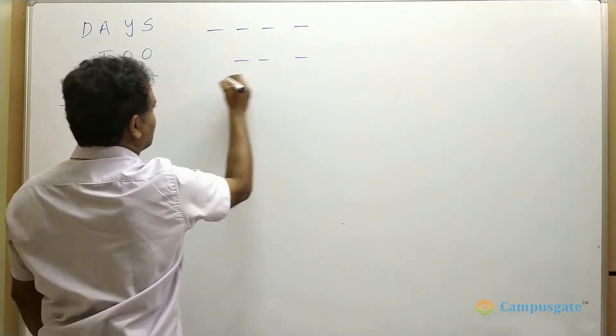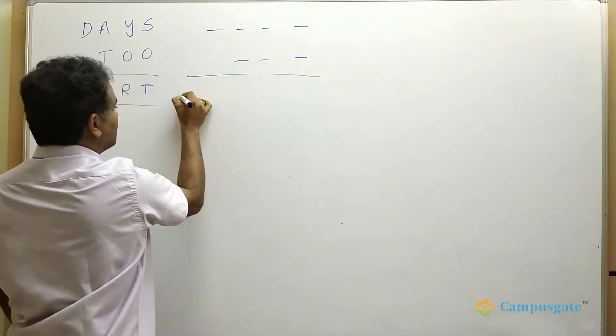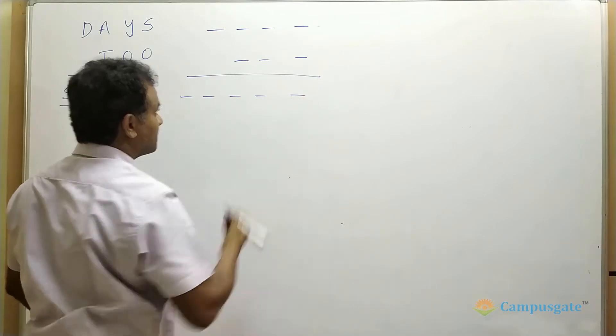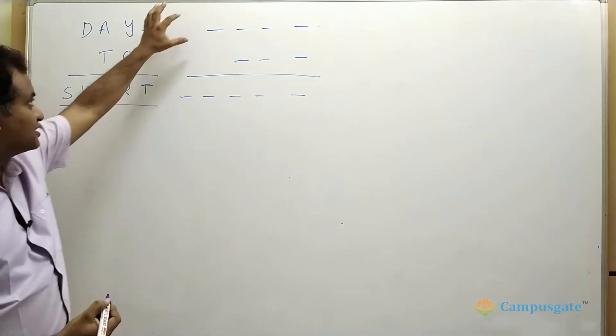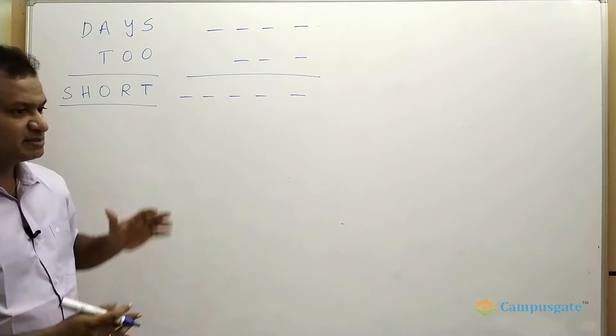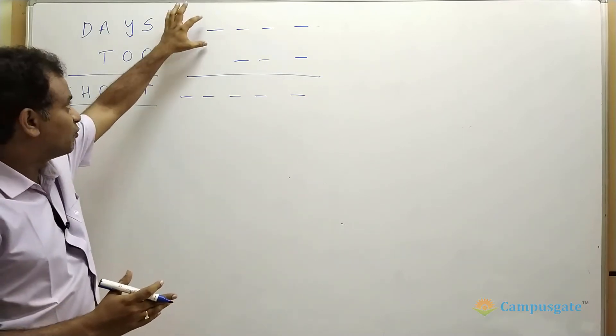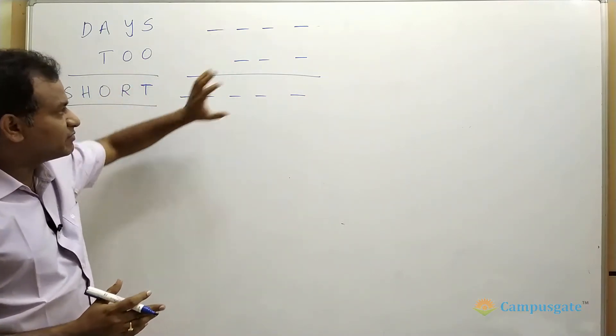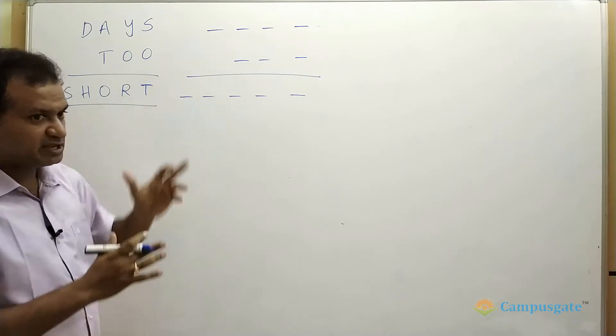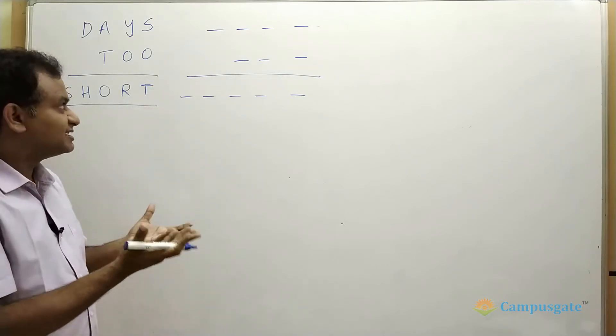So a four digit number when added to a three digit number will give you a five digit number. Therefore the four digit number is closer to 10,000, right? Because five digit numbers, the minimum number is 10,000. So a four digit number when added to a three digit number will give you a five digit number means this number should be in 9,000, otherwise it is not possible.